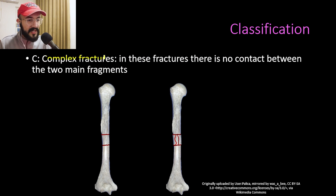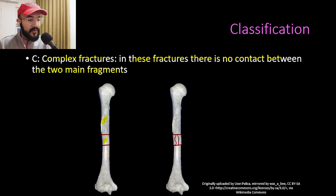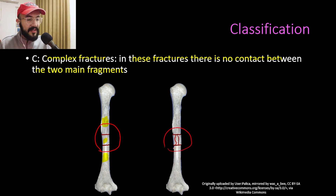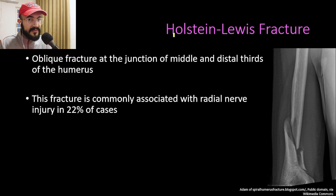In Group C we have the complex fractures, where there is no contact between the two main fragments. As seen in the example, there are three fragments with no contact whatsoever between the two main fragments. The first example is the segmental fracture and the second is the irregular fracture.